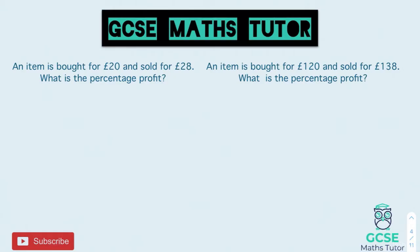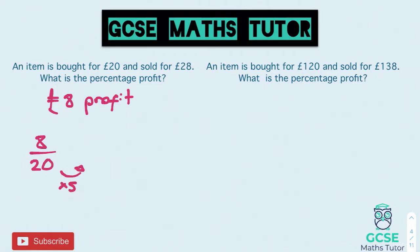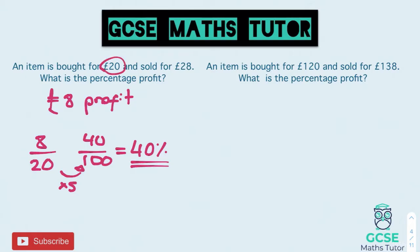For the first question: an item is bought for £20 and sold for £28, so we have £8 profit. Using the fraction method, that's 8 over 20. Multiply straight away by 5 to get 40 over 100, which is 40%. Alternatively, 10% of £20 is £2, and to get to £8 profit you multiply by 4, giving 40%. Both methods give 40%.